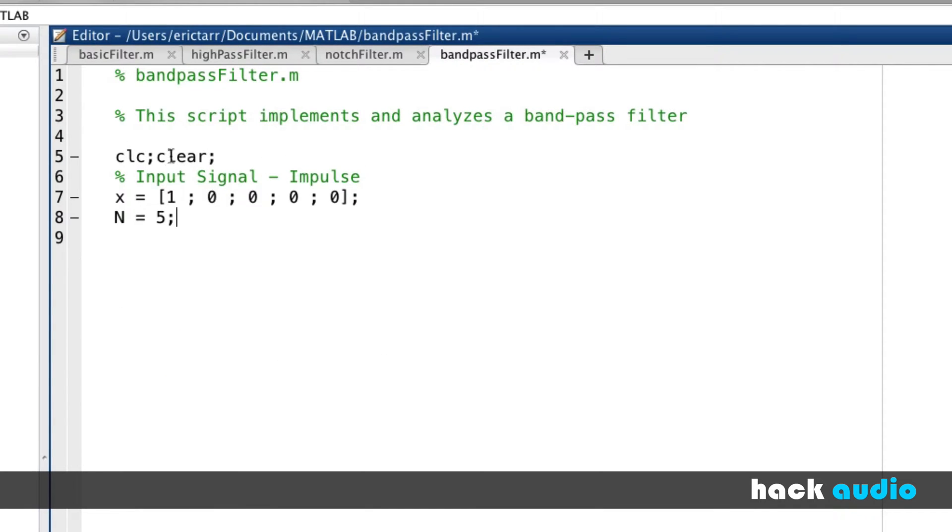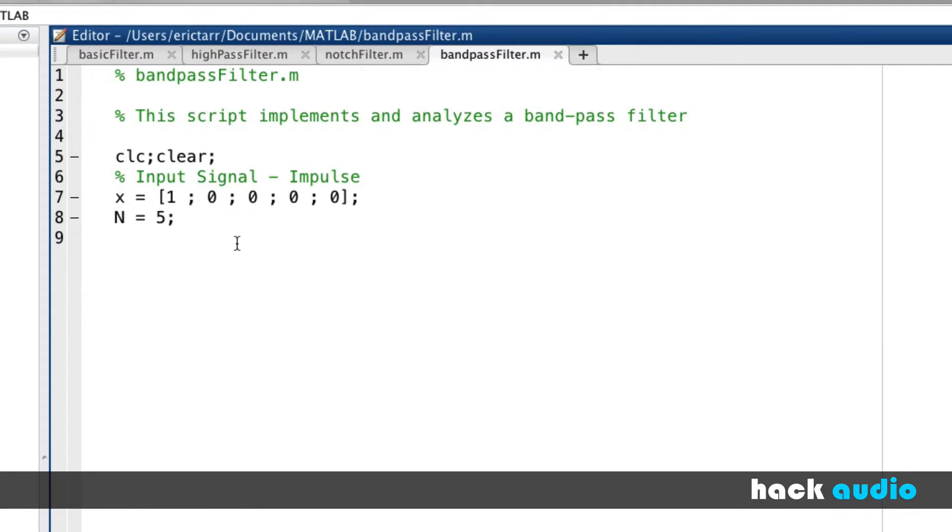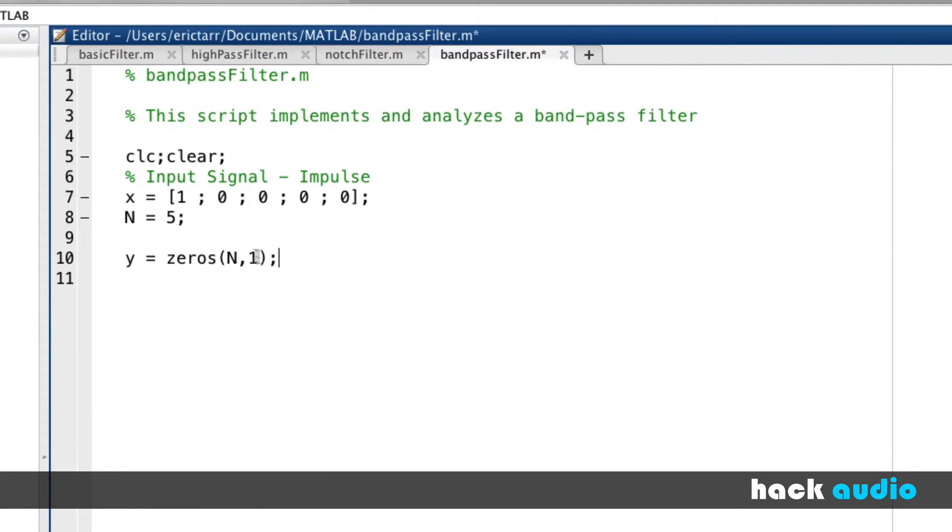Initially, what we'll do is we'll create an impulse signal that we'll use as the input for both implementing the filter and also analyzing it. So the first thing, we just clear things off. Then we create X, which is going to be our input signal, and we're going to produce Y, which is going to be our output signal. In this case, our impulse response also describes and represents how our system itself is going to behave.